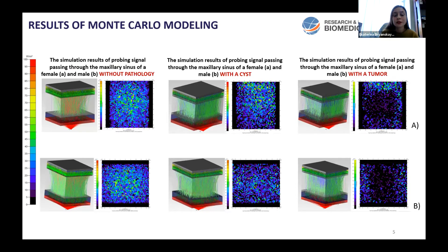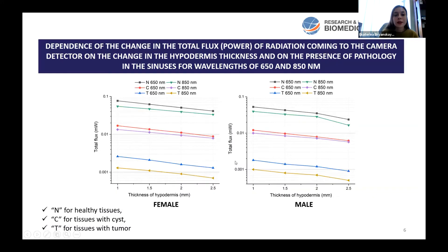In this slide you can see the results of simulation for male without pathology in the maxillary sinus, with cystic fluid, and with a tumor. As you can see, there is a decrease in the signal in both male and female, while this decrease has a more pronounced character in the near-infrared range. We can also see that the absorption of light in male is higher than in female.